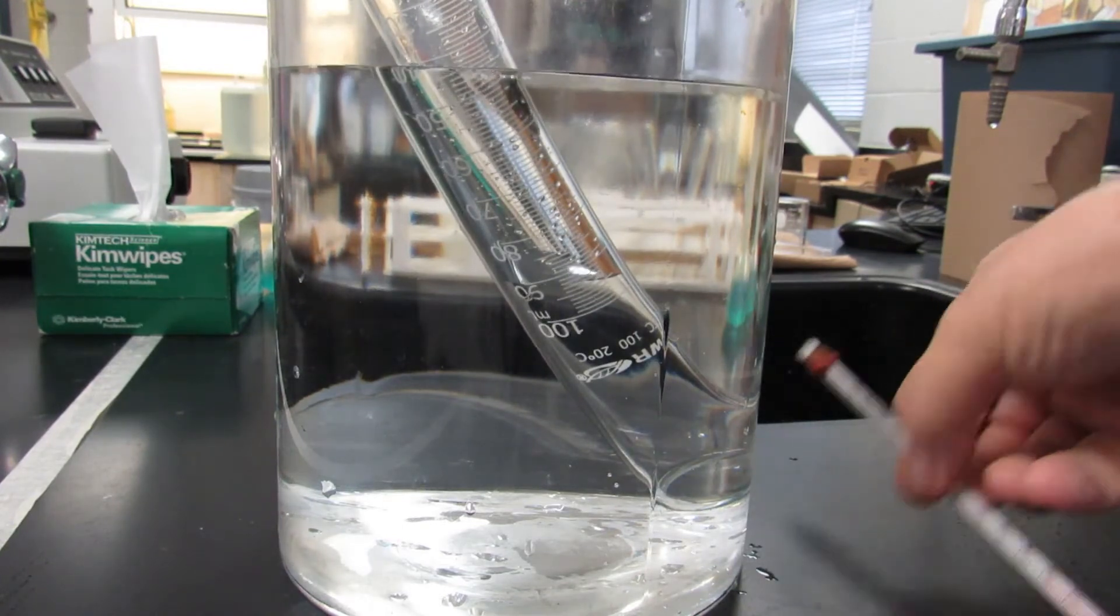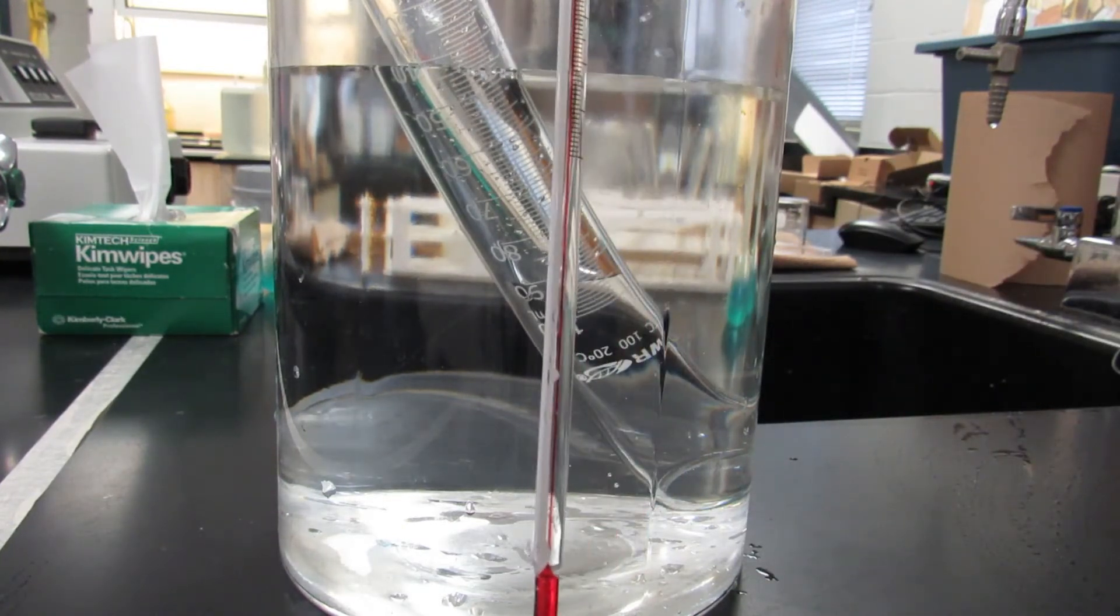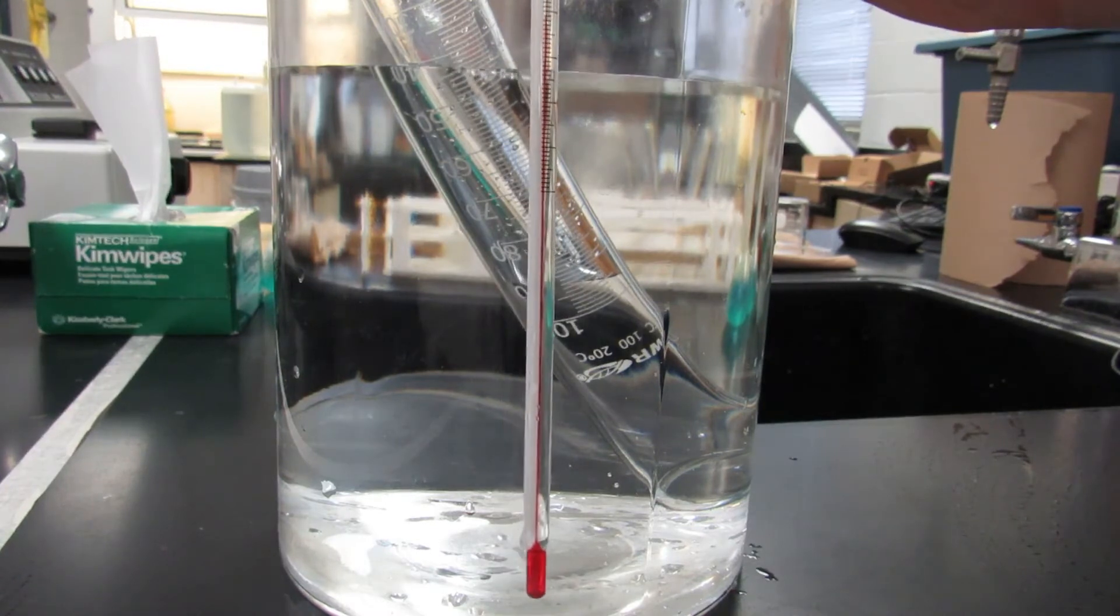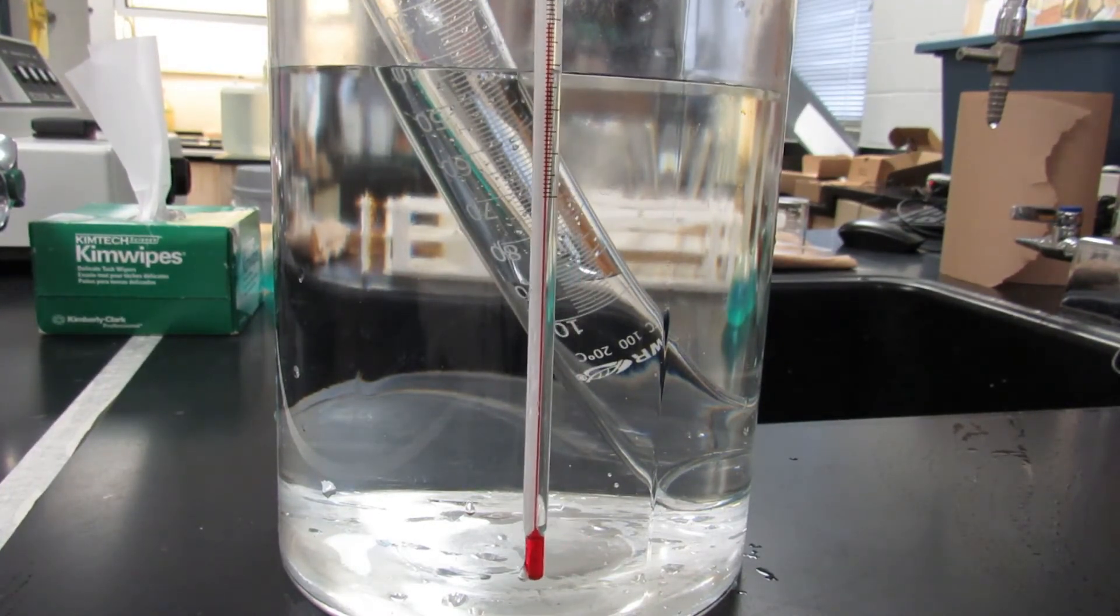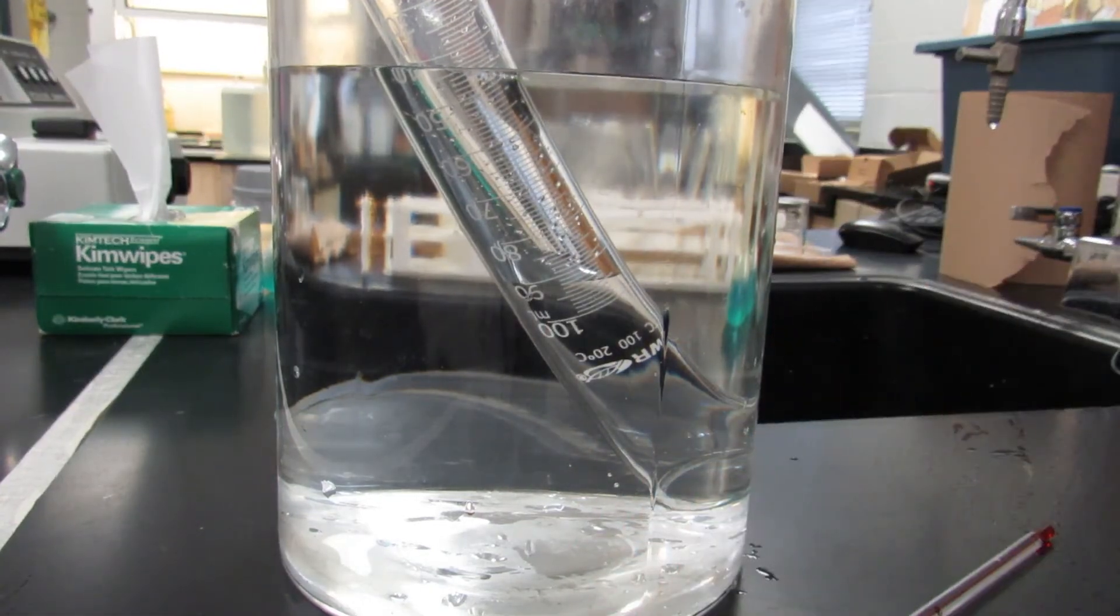And then I need to grab the thermometer. When I read the thermometer, I had 19.4 degrees Celsius in the room, so that's going to be the temperature of my gas. That's it.